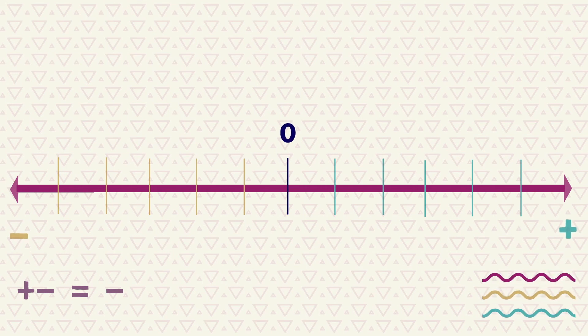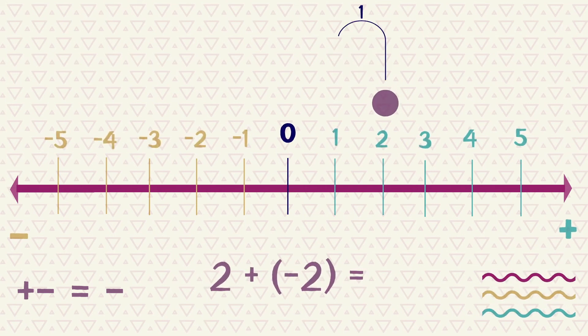Again, on the number line, we start at the number 2 and subtract 2, which leaves us with 0.